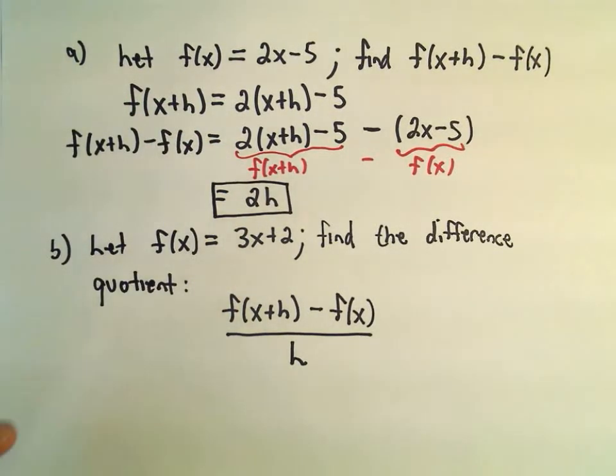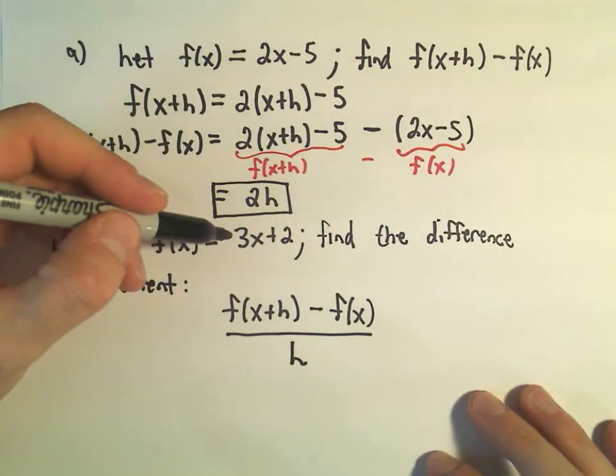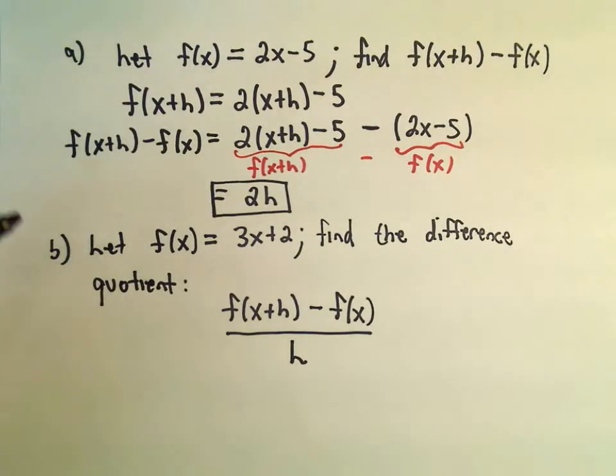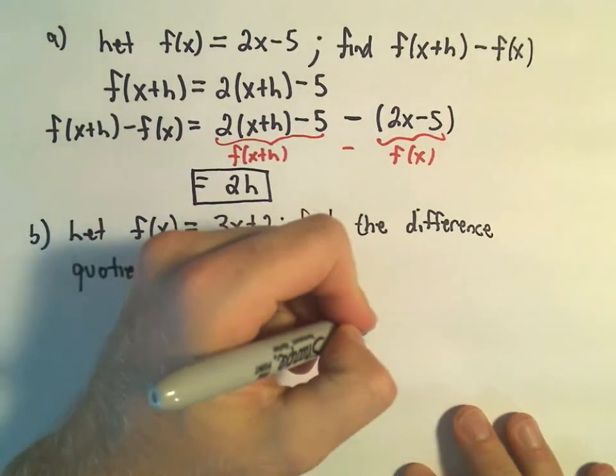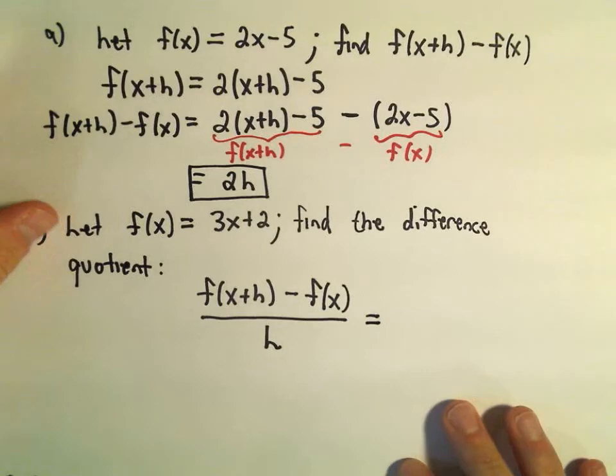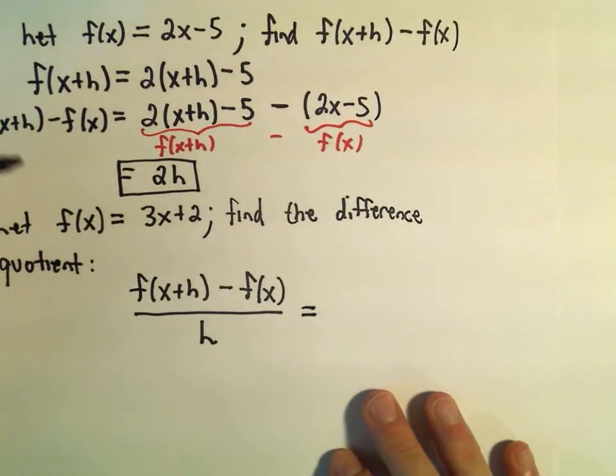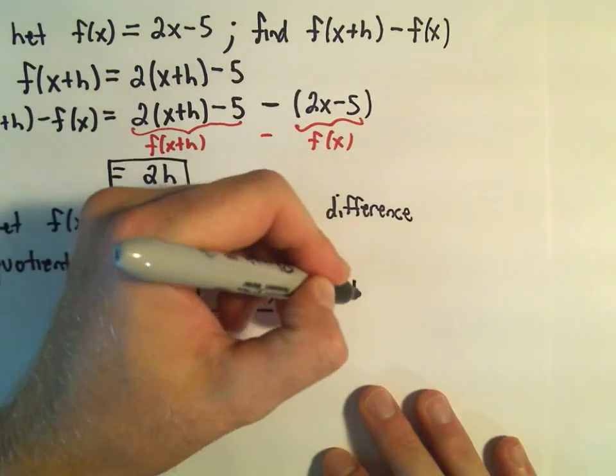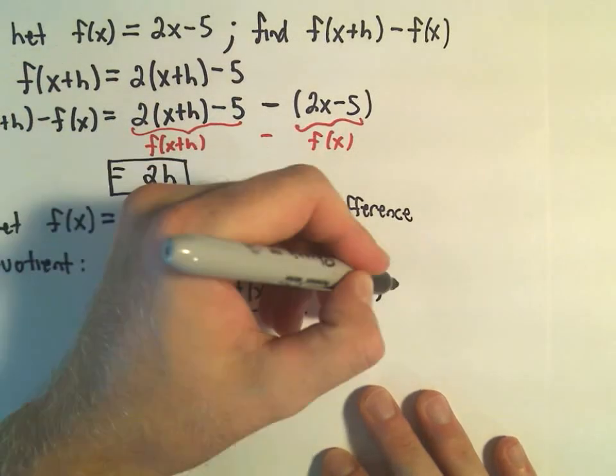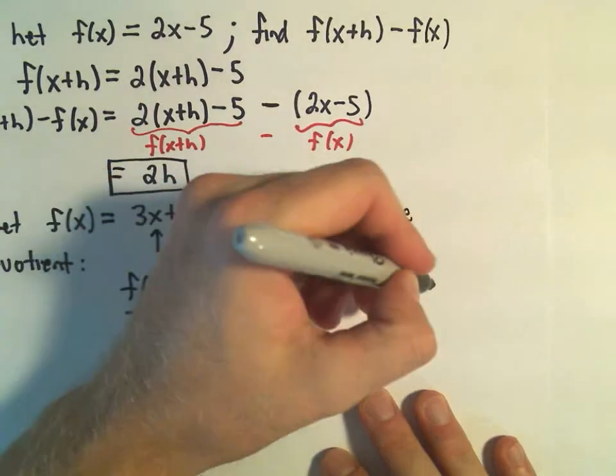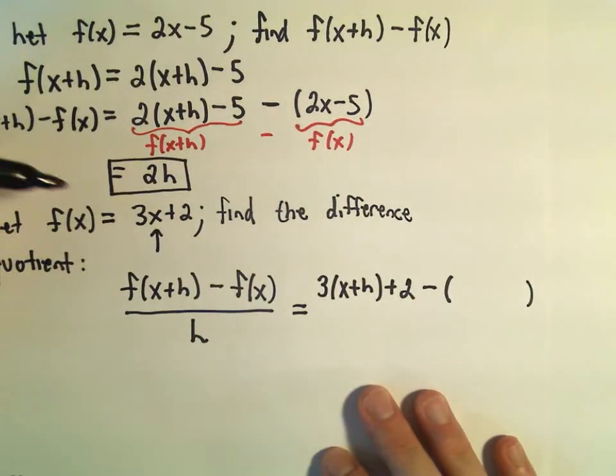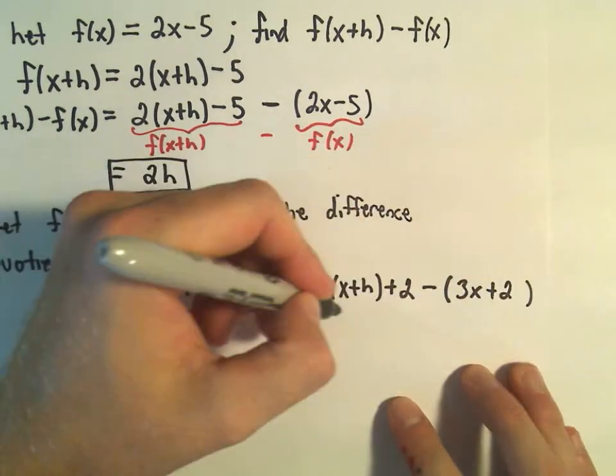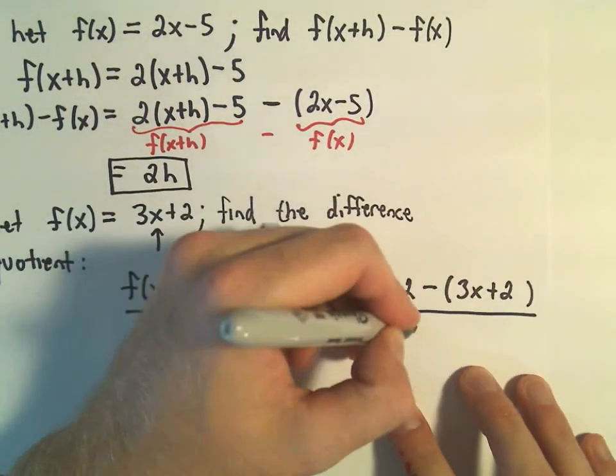Okay, so suppose f(x) is 3x plus 2, and we actually want to find this difference quotient, f(x+h) minus f(x) over h. So I'm going to squeeze it all in here. Okay, so again, if we find f(x+h), that just says replace the x with x plus h. We've got our plus 2. And then subtract away the original function, f(x), which is 3x plus 2. And then divide all of that by h.